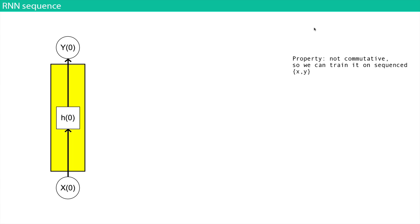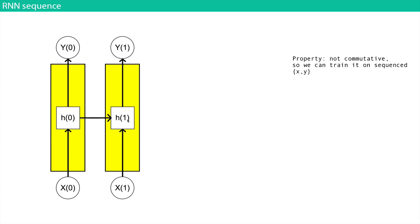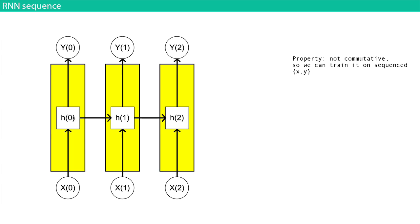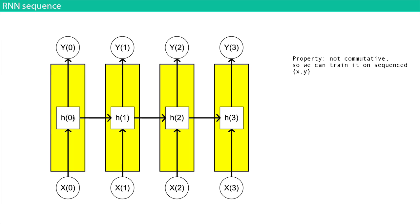LSTM stands for Long Short-Term Memory. Let's say we have a hidden state at time step zero. At the next time step, h(0) updates the next — this is going forward in time. At time step one, the recurrent neural network's hidden state is not only a function of x(1), but it's also a function of the previous hidden state. It just keeps going in however many steps you want to go forward into the future.